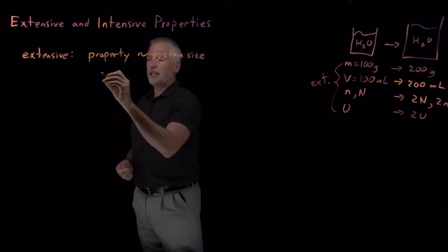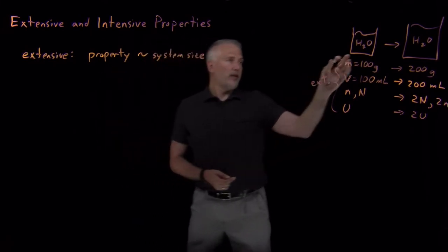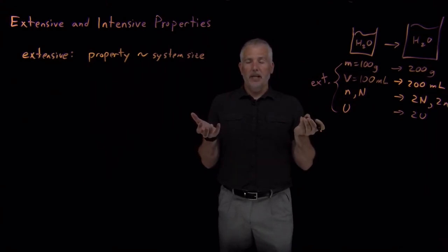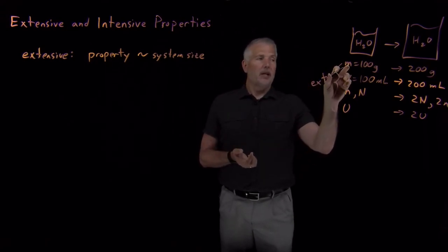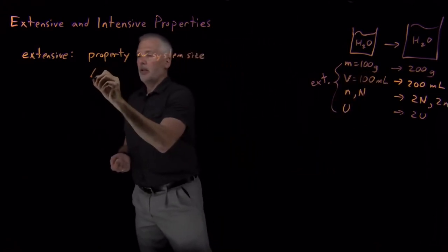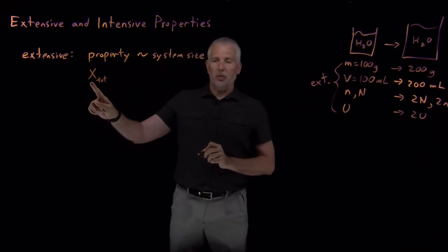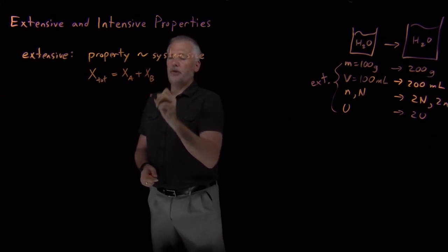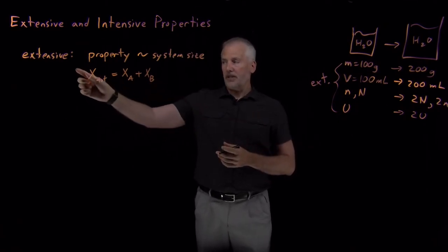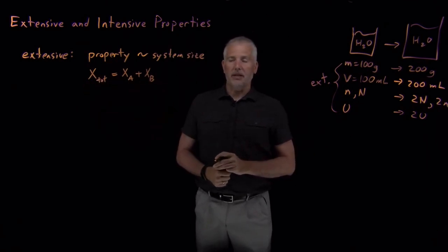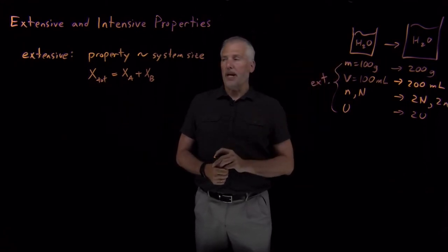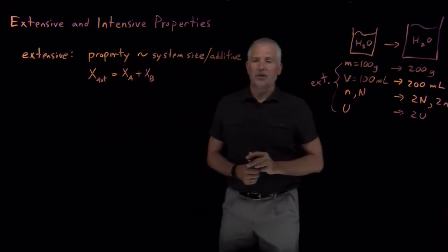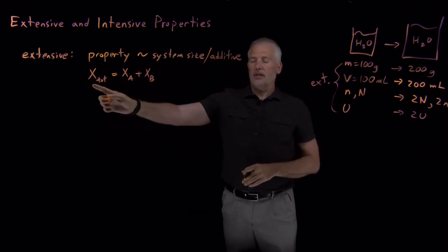Another way to think about extensivity is: if I have two systems — they don't have to be identical — say 100 grams of water and a 50-gram block of copper placed in the water, the total mass is still 100 from the water and 50 from the copper. So an extensive property is additive: if I have system A and system B and combine them, I just add the two property values together to get the property for the total system.